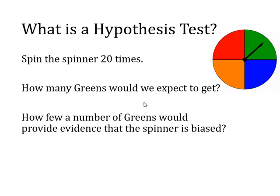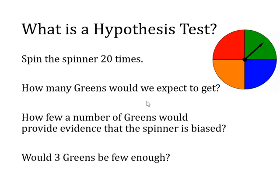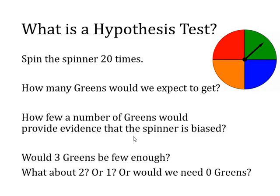So would three greens be few enough? If we only got three greens out of 20, would that be enough to say the spinner is biased and the probability of getting green is less than a quarter? Or what about two or one — would we need those sorts of numbers? Or would it only convince you if we had zero greens? A hypothesis test is basically used to make decisions like that.